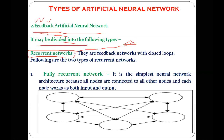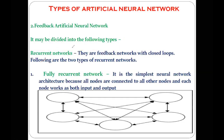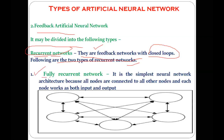The word 'recurrent' comes from recursion, meaning repetition. In the feedback ANN, signals go back to the hidden layer repeatedly — that repetition or iteration is referred to as recurrent. So the feedback network is also referred to as a recurrent network. Recurrent networks are feedback networks with closed loops, and they are further divided into certain types.